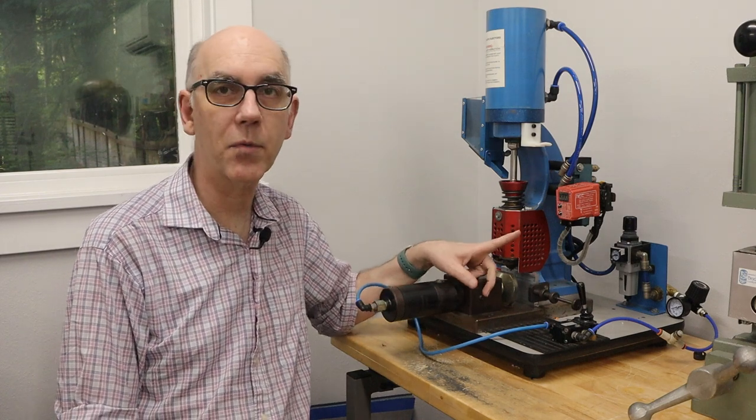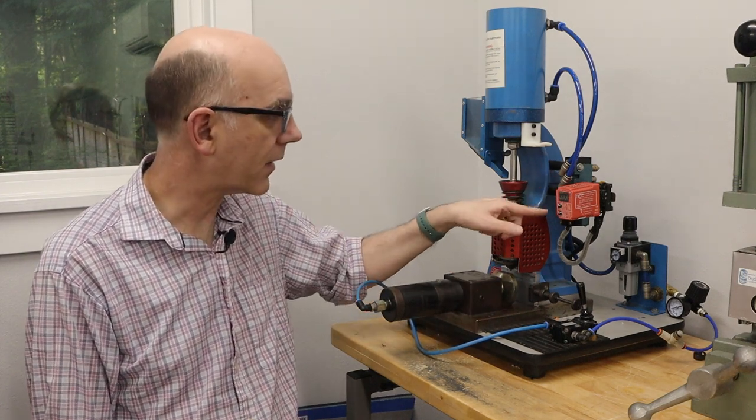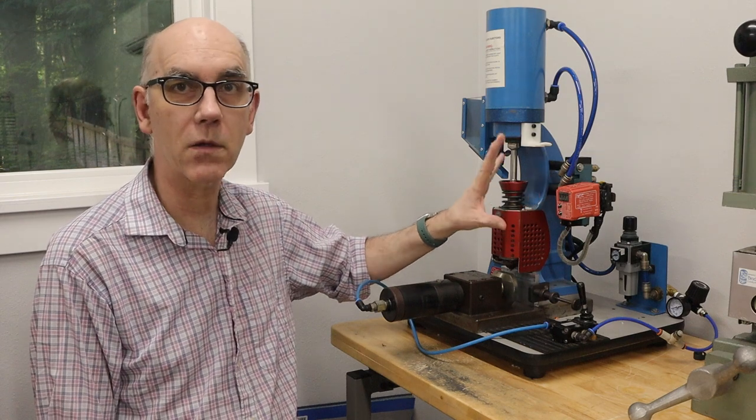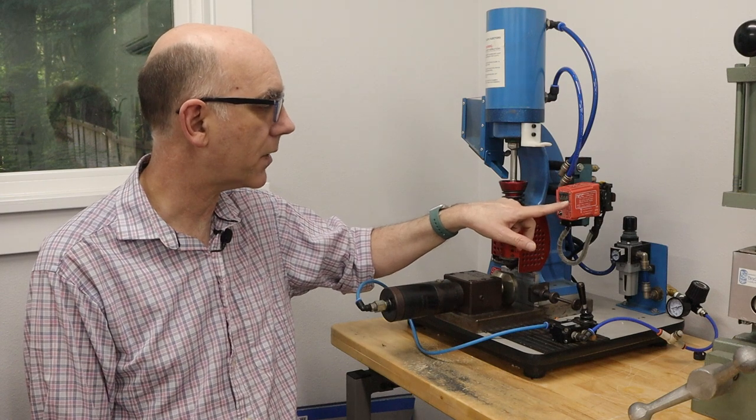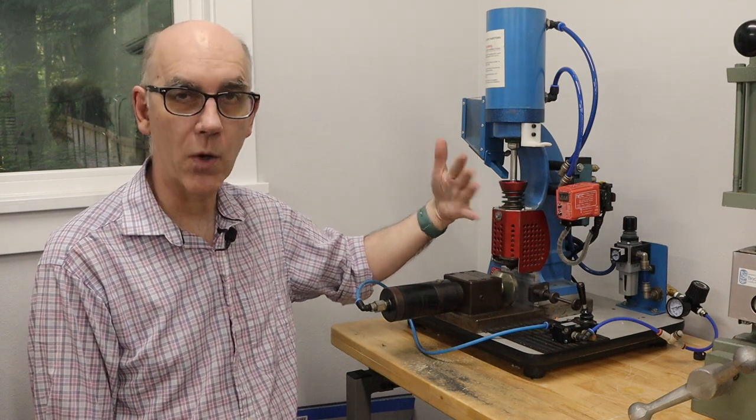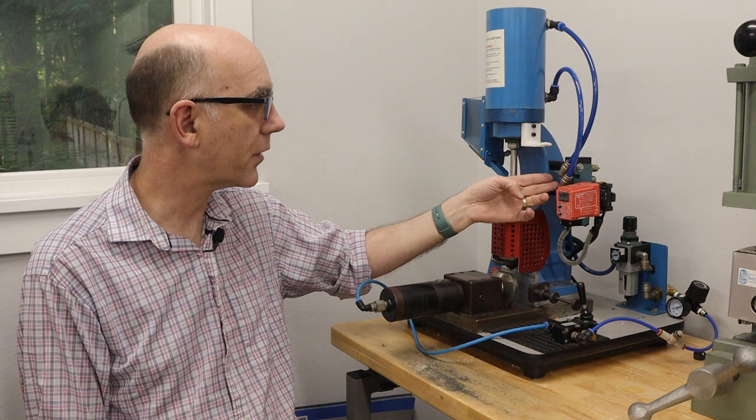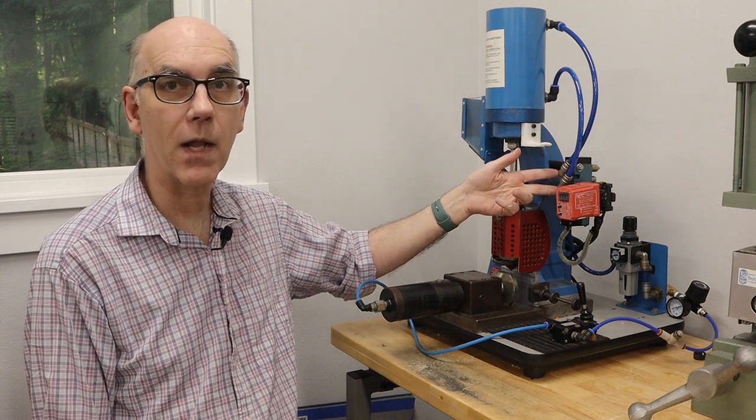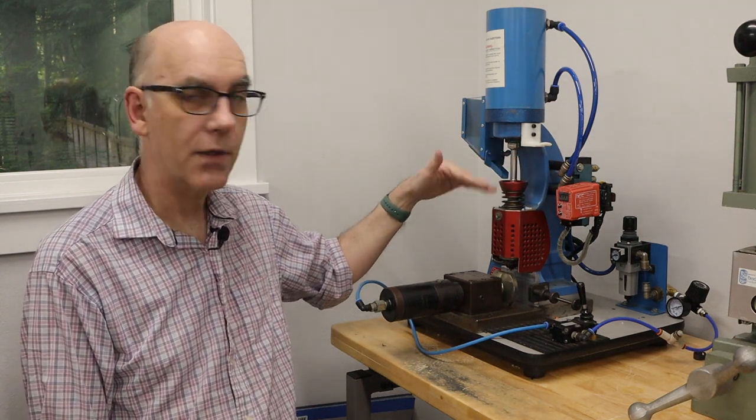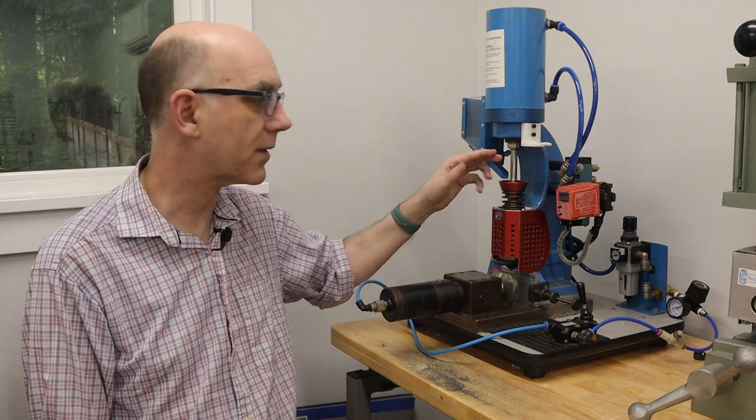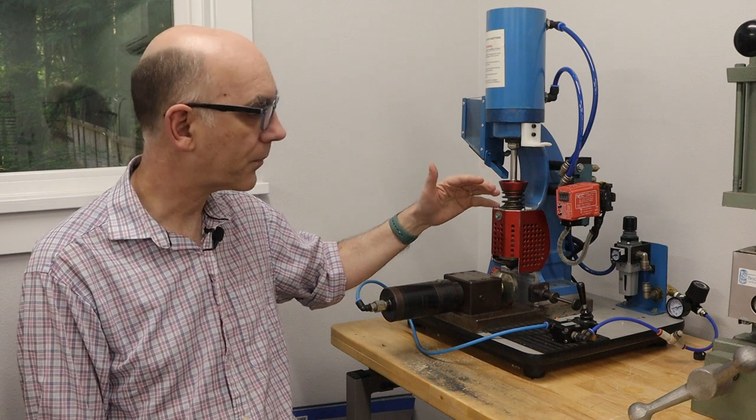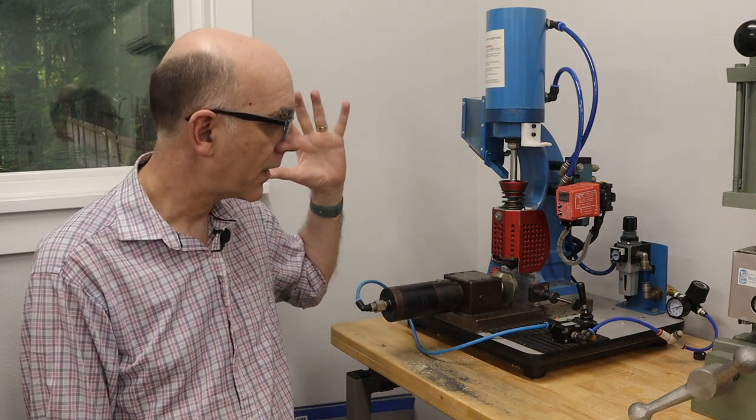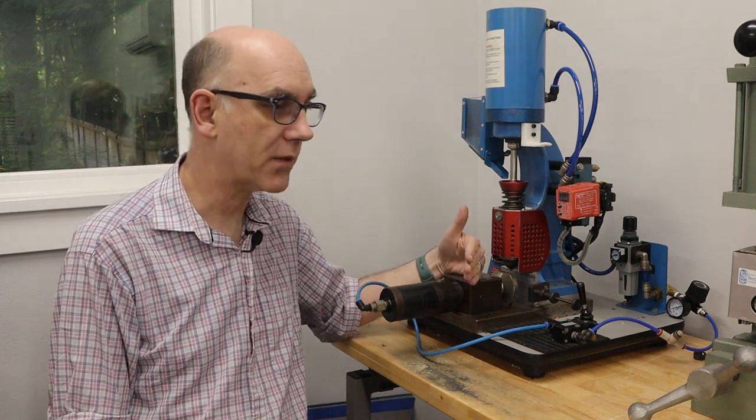The other thing that the previous owner did is added some electromechanical controls. This is a timer that is currently set up to be in 0.1 second increments, controlling a valve here that will control the cycle. And what that means is that I can precisely control the timing of this cycle. This is my favorite machine to start with.